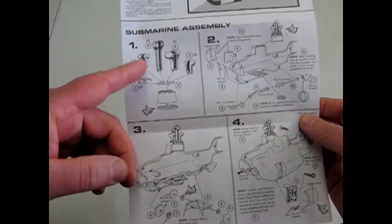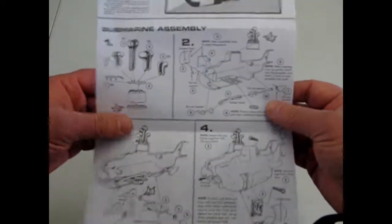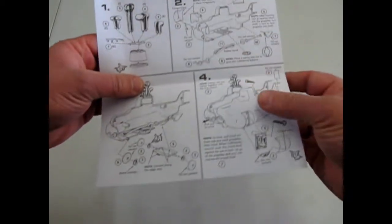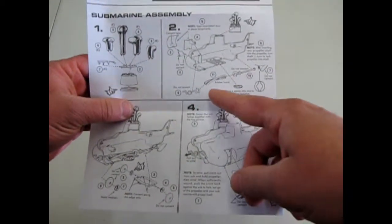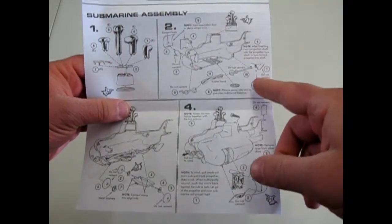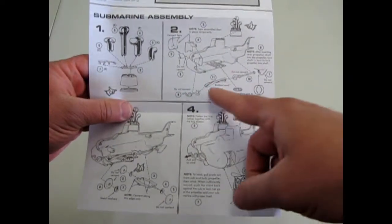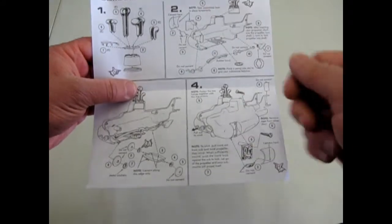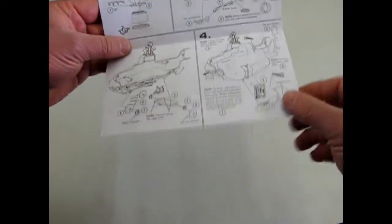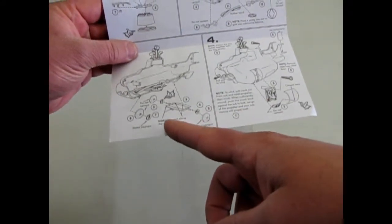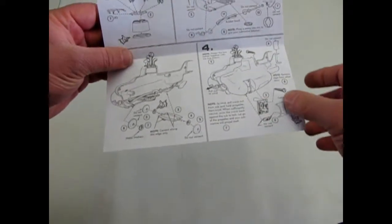There it shows our periscopes as well as building the sub. And this one actually will drive in the bathtub I believe. It gives you a propeller and a rubber band in between so you can wind it up and let her go. Though there's some wheels too so it could roll along.